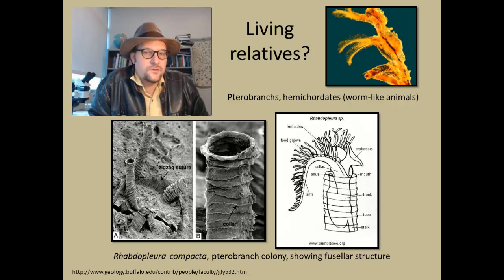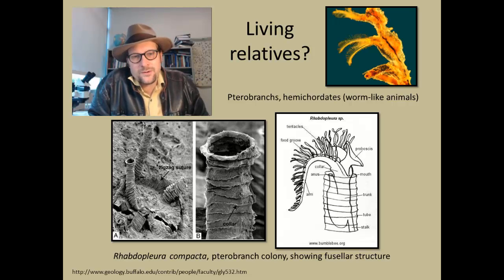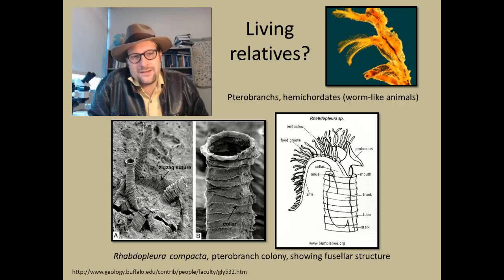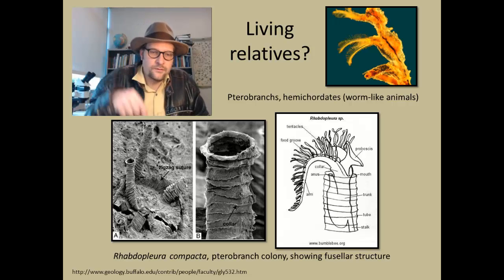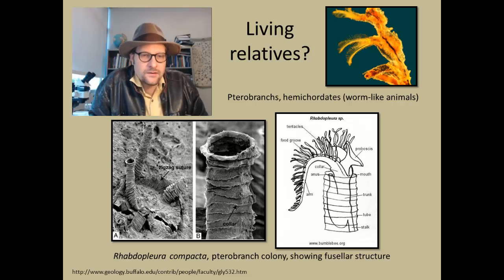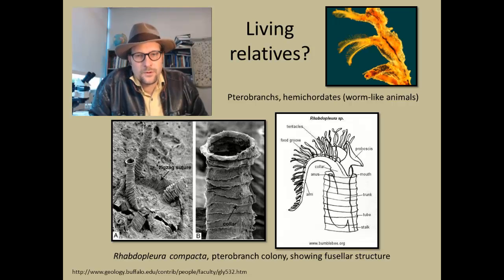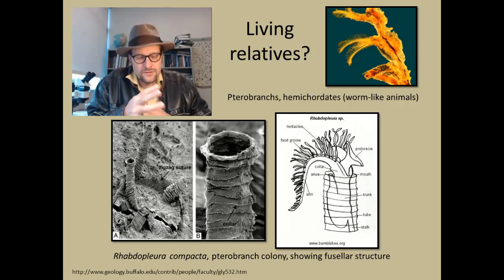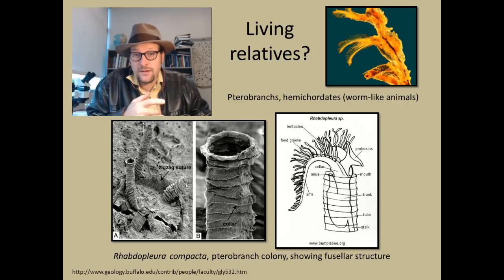Graptolites appear to be closely related to the pterobranches — hemichordate members that are worm-like creatures living in the ocean. These include tube worms often seen in deep sea vents, discovered in the 1970s when oceanographers explored those environments. They build their tubes out of collagen. Here's an example of Reptopleura compactia, a pterobranch colony — little tube-wormy things with food tentacles that come out, a proboscis, waving those tentacles back and forth, filter feeding.